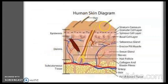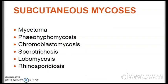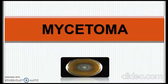In human skin there are epidermis, dermis and subcutaneous tissue. The common subcutaneous mycoses include mycotic mycetoma, phaeohyphomycosis, chromoblastomycosis, sporotrichosis, lobomycosis, and rhinosporidiosis. Now let's see each of them in detail.